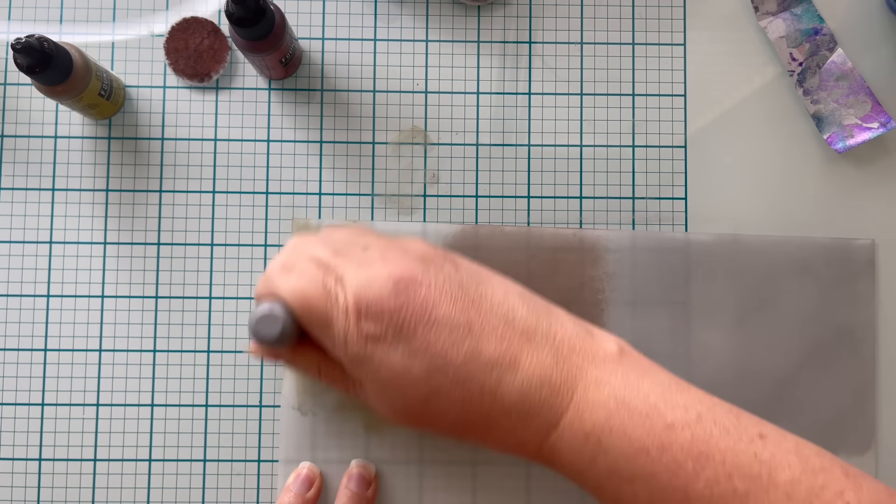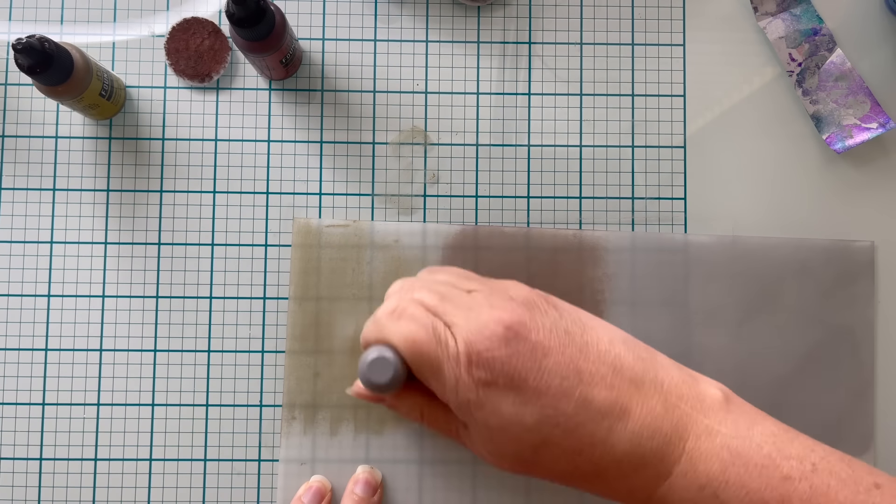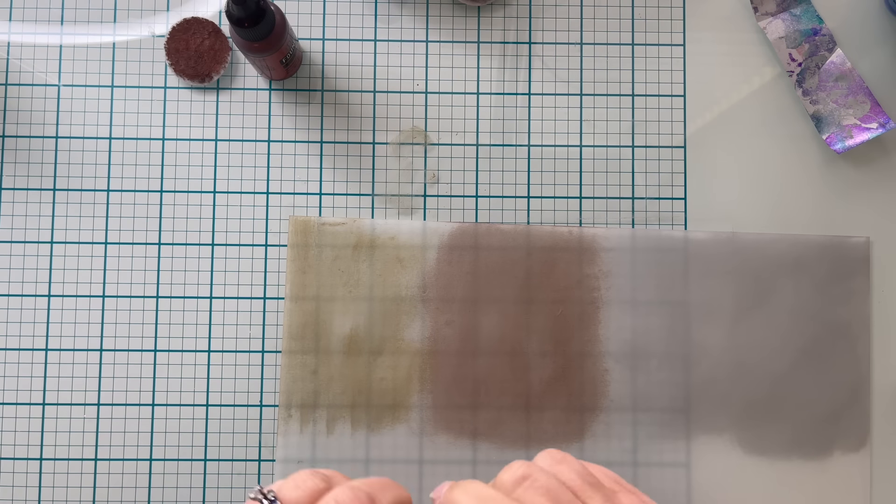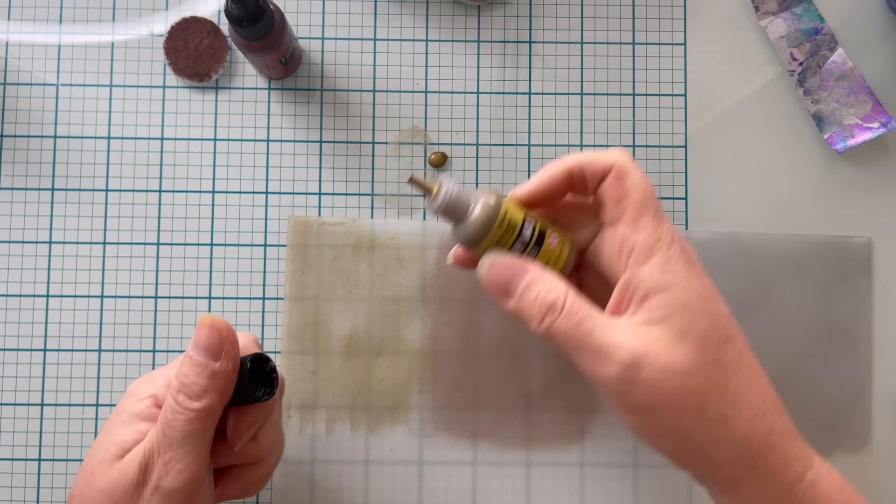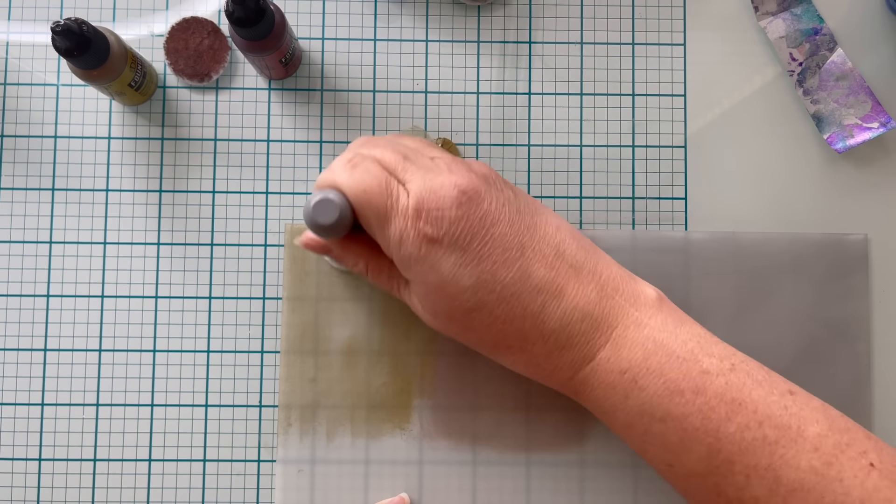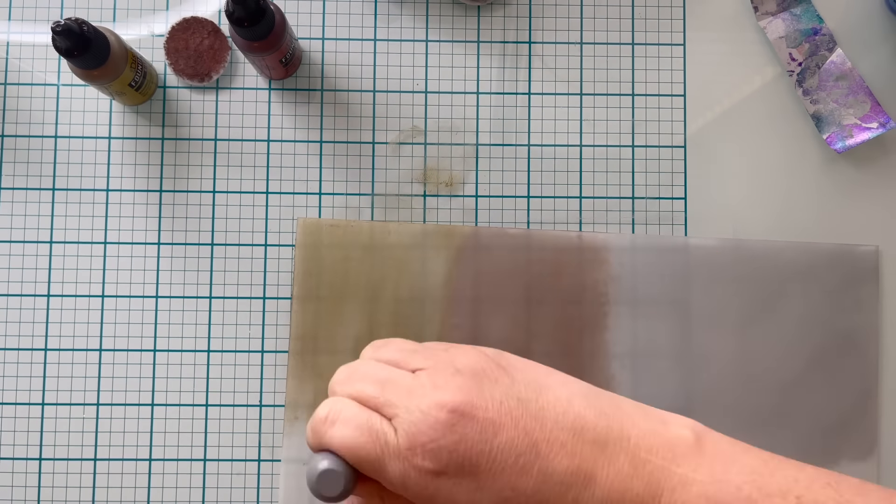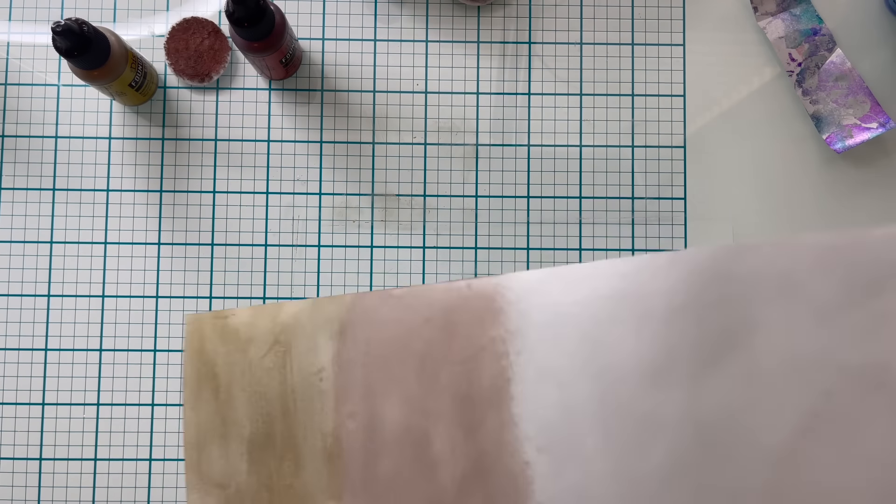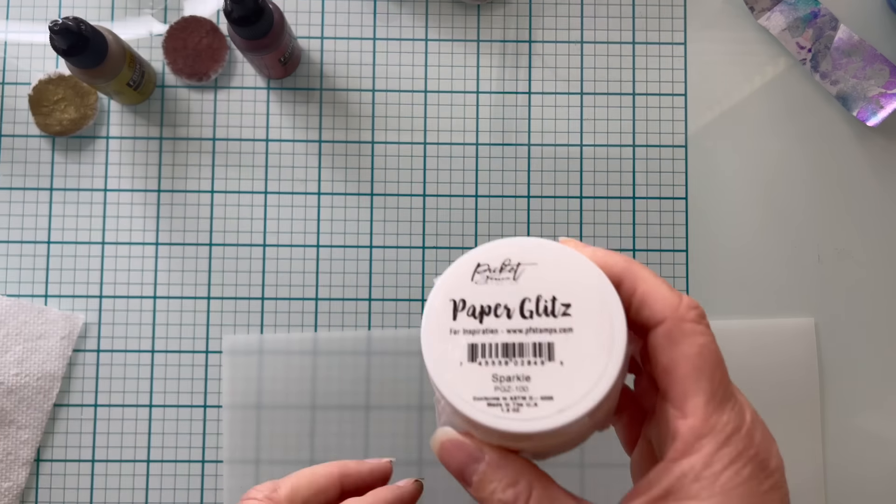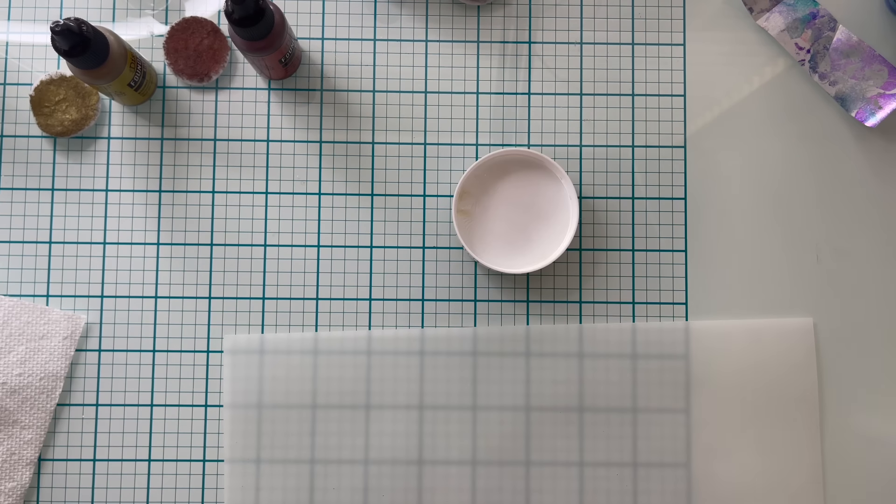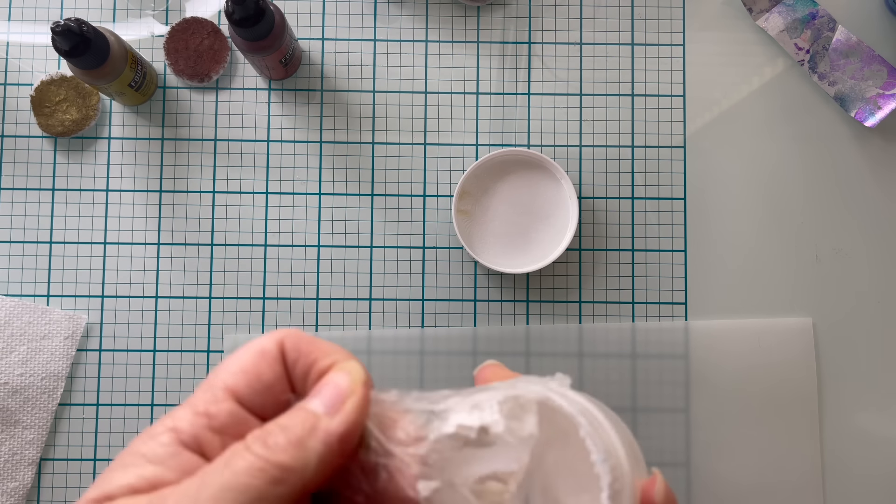And then we're going to do one other thing because I thought, what else do I have in my stash that I can use to get a completely different effect on vellum? Now, I love the fact that I was able to use something that I already had to create something completely different. And I honestly have not seen this before. I was still looking for something that would give me this silvery, shimmery look. And I went back to paper glitz. This one's called Sparkle.